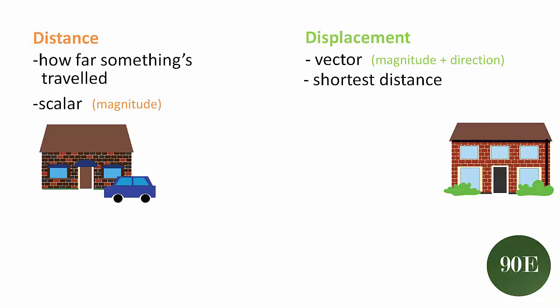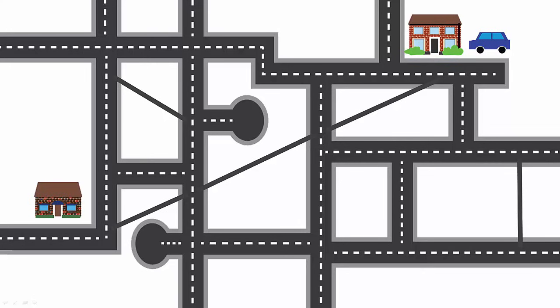Let's look at an example. This is your neighborhood. This is your house. This is your friend's house.